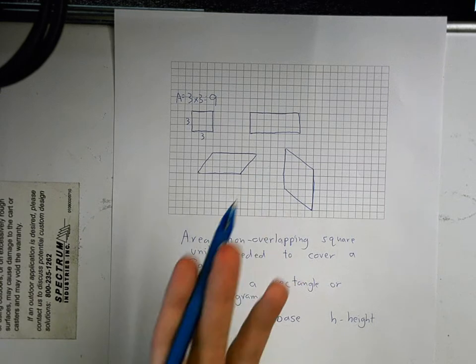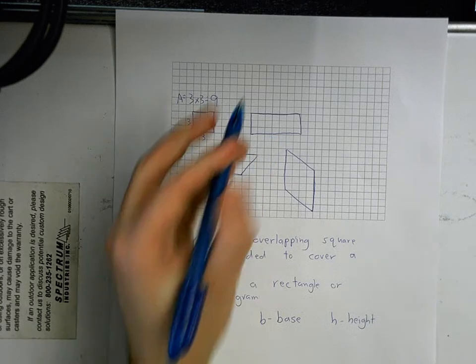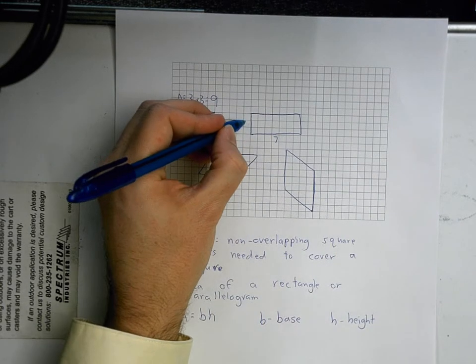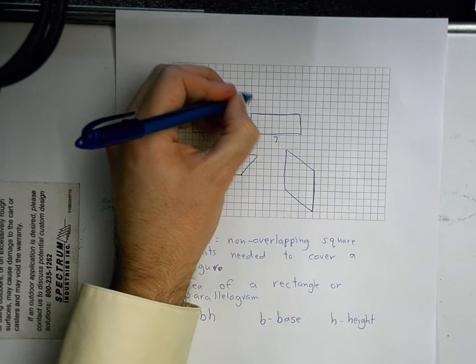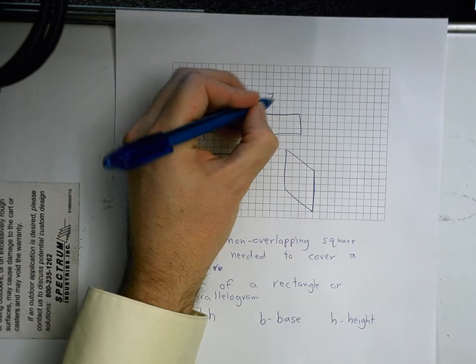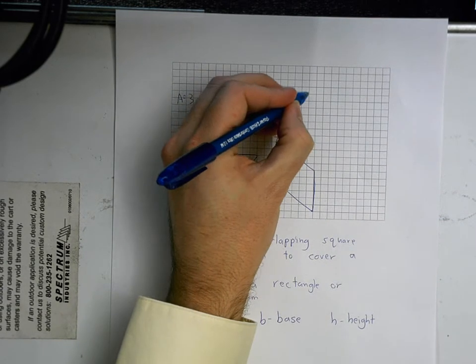Now on this one, it's a little different, a little bit longer. One, two, three, four, five, six, seven is my base. And my height is still one, two, three. So I know that area equals base, which is seven times height, which is three. And that's 21.